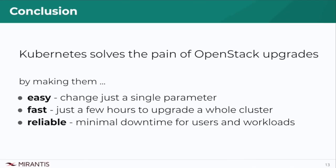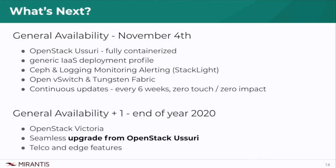We have just seen how Mirantis OpenStack on Kubernetes solves the challenge of upgrading such a complex application as OpenStack using the advanced mechanisms the Kubernetes platform provides. The first release of Mirantis OpenStack on Kubernetes will become available on November the 4th, providing enough functionality for any company to build their own private infrastructure-as-a-service platform. From the very beginning, Mirantis will start delivering continuous updates — a new release every six weeks with a zero-touch, zero-impact migration path. The second release, available at the end of 2020, will support OpenStack Victoria with an upgrade path from OpenStack Ussuri.